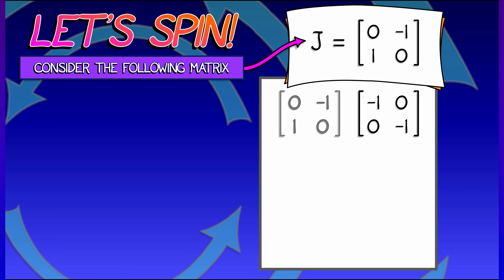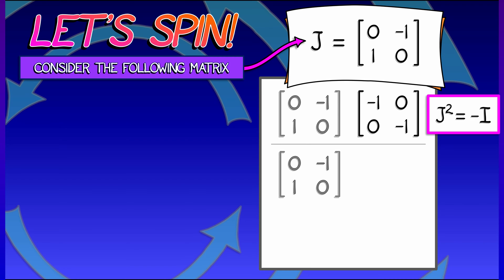And you can check that the results are negative 1, 0, 0, negative 1. Now have we seen that matrix before? Well, almost. It's almost the identity matrix, but it's multiplied by negative 1. So J squared could be said to be minus I, the 2x2 identity matrix.